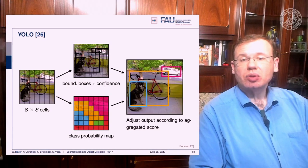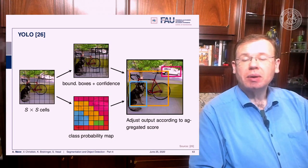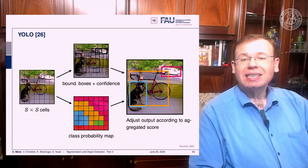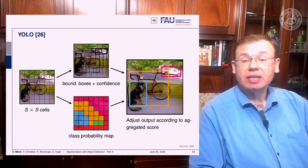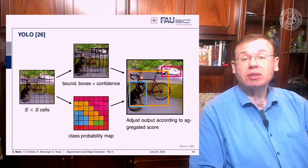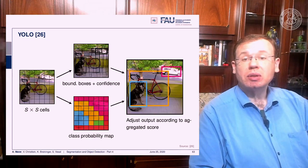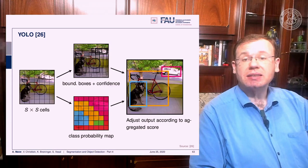In the end, to produce the final object detection, you compute the overlap of the bounding box with the respective class probability map. This allows you to compute the average within the bounding box to produce the final class of that respective object, and this way you are able to solve complex scenes.